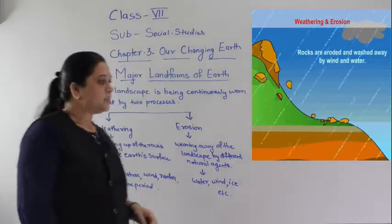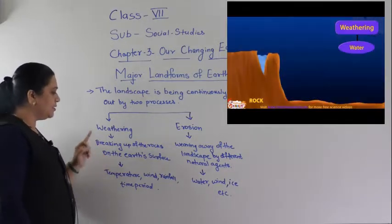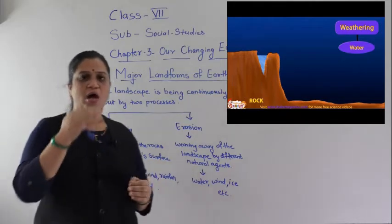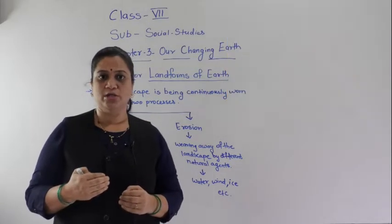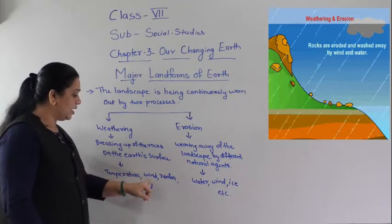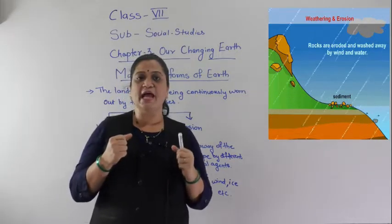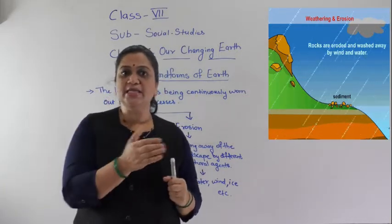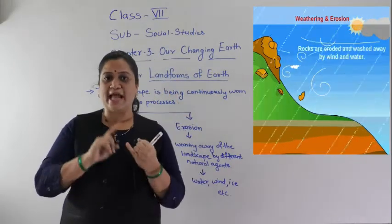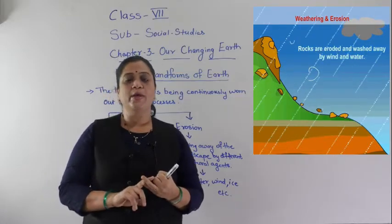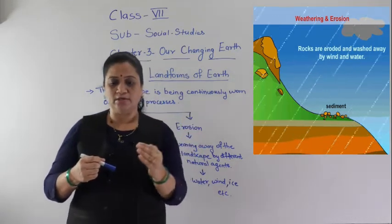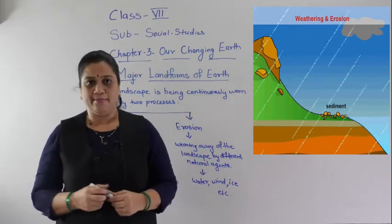What is weathering? Weathering is the breaking up of rocks on the earth's surface. How do these rocks break? By the action of temperature, wind, and rainfall. Wind has very high pressure and by this wind, rocks break down into small sediments. By the action of temperature, wind, and water, these rocks start breaking down and fall on the earth's surface as small sediments.